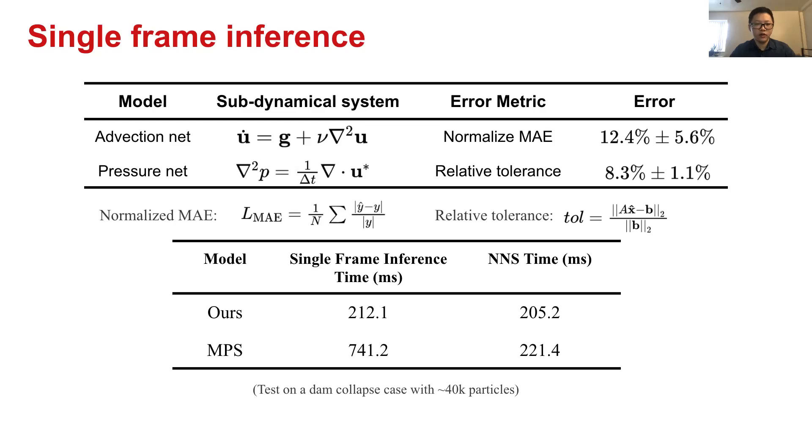For pressure net, we calculate the relative tolerance of its predicted pressure under pressure-Poisson equation. And also for pressure net, you can see here it also maintains a relatively low error level.